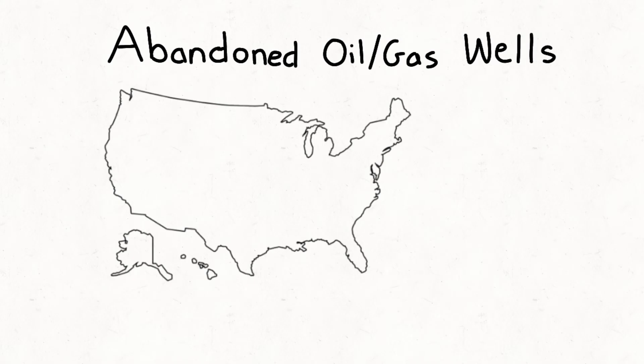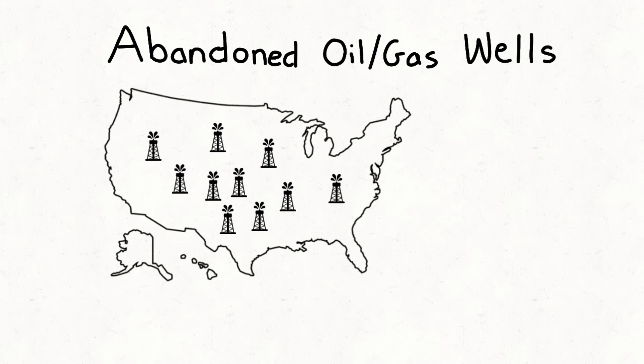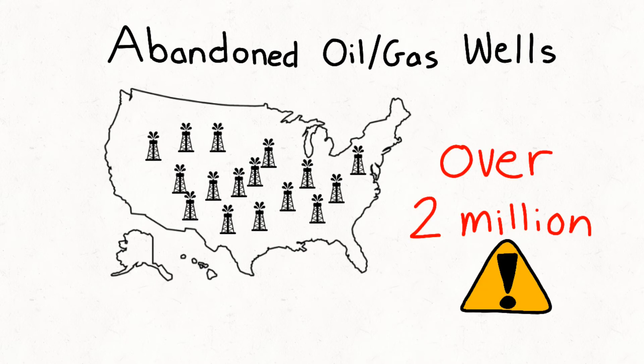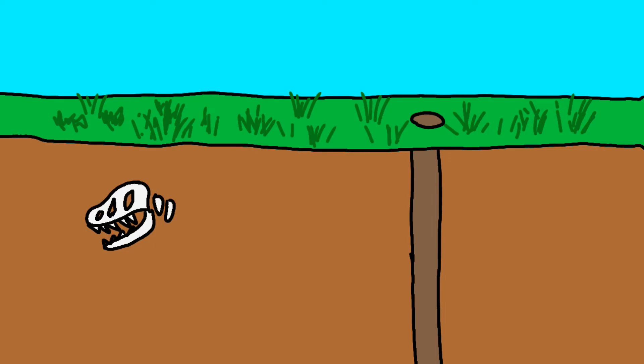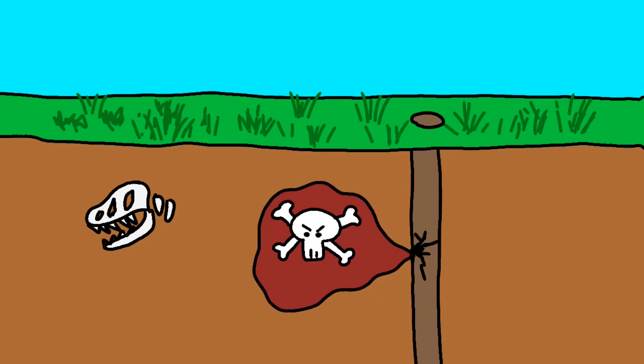The EPA estimates that there are over 2 million active unplugged oil and gas wells buried in the United States. These abandoned unplugged wells leak, spreading toxic chemicals through the ground, polluting our groundwater, and wreaking havoc on our environment.